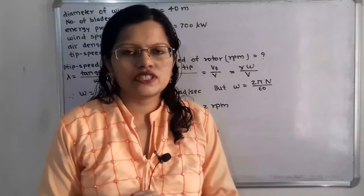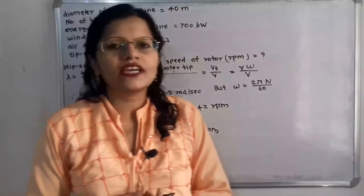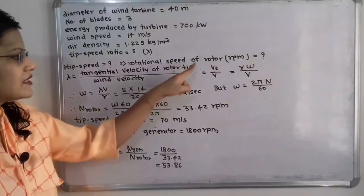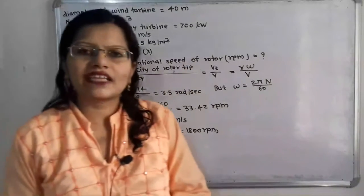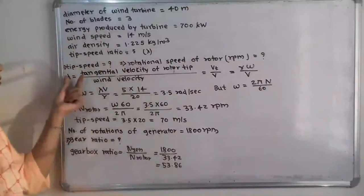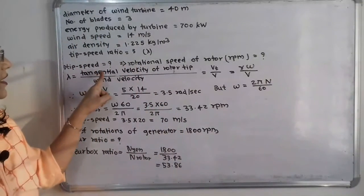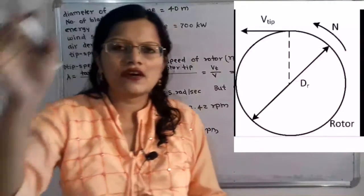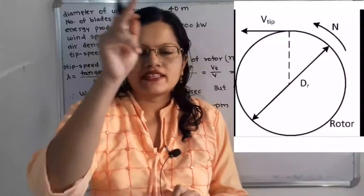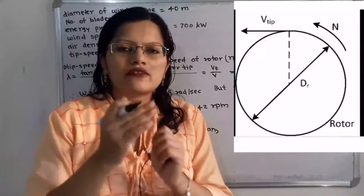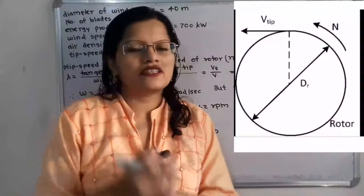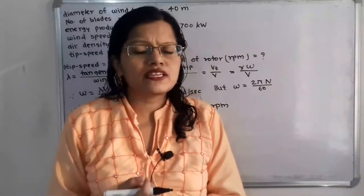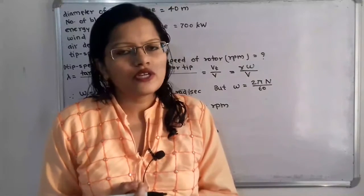The tangential velocity is the linear velocity and its unit is meter per second. The wind velocity is also in meter per second, so these units cancel and we get the tip speed ratio. The rotor rotates in circular motion, so we calculate the tangential velocity v in meter per second. The relation between linear velocity and angular velocity is v equals r omega.